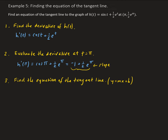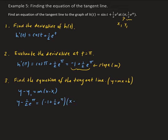Now we can find the equation of the tangent line. We'll use the point-slope form and then rewrite it in slope-intercept form. We already found our slope, which is our m value. So using point-slope form, with pi as x1 and one-half e to the pi as y1, we get: y minus one-half e to the pi equals minus one plus one-half e to the pi, times x minus pi.